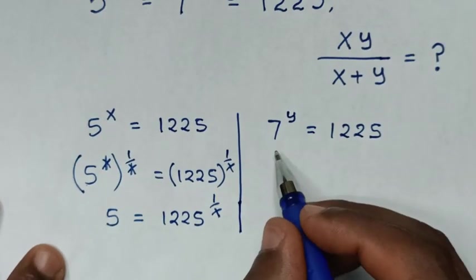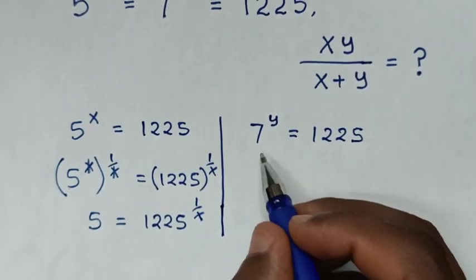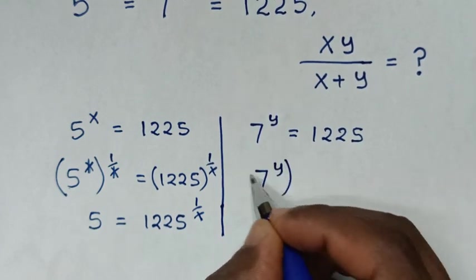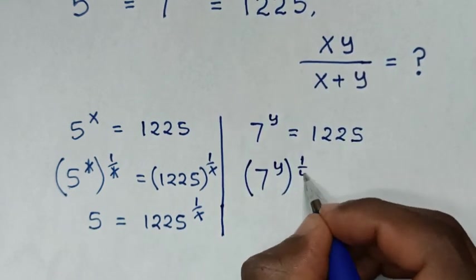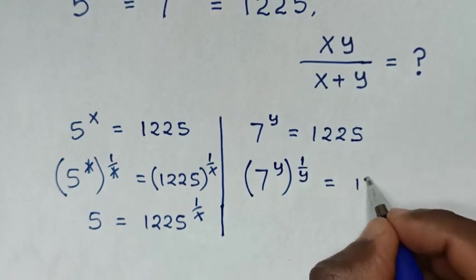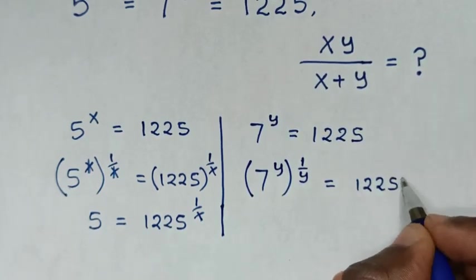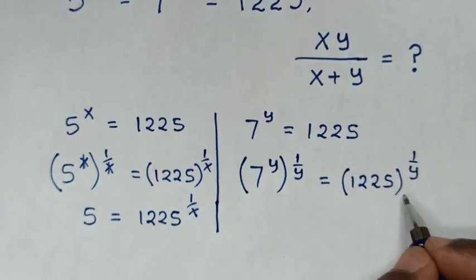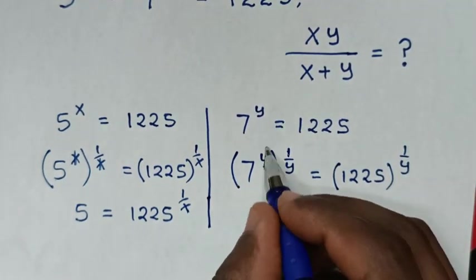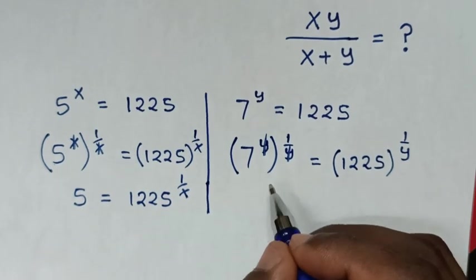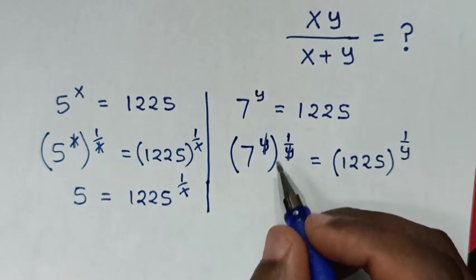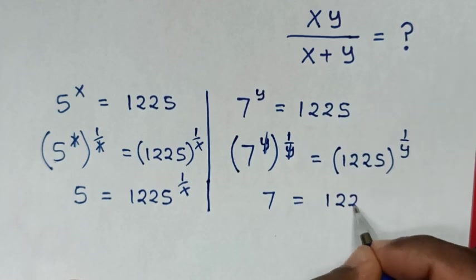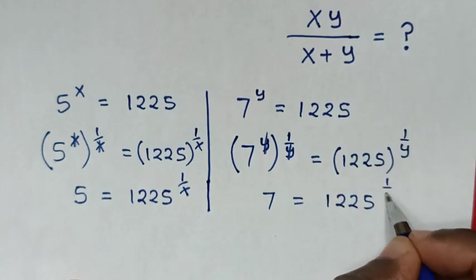From the second solution, we will power by 1 over y in both sides. So it will be 7 power y, bracket power 1 over y, is equal to 1225 bracket power 1 over y. To simplify, this y will cancel this y. So it will be 7 power 1, which is 7, is equal to 1225 power 1 over y.